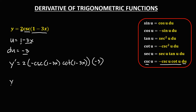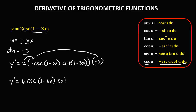So y prime is equal to 2 times negative 1, that's negative 2, and negative 2 times negative 3, that's positive 6. Then cosecant of 1 minus 3x and cotangent of 1 minus 3x.